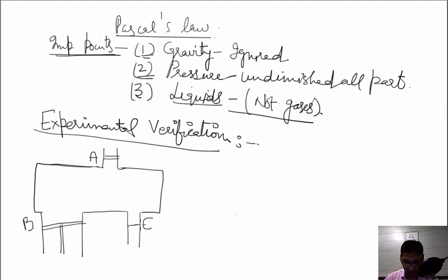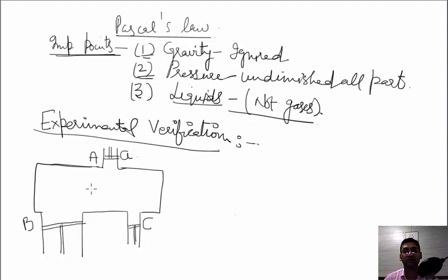We have massless and frictionless cylinders in two pistons. If we apply a pressure or force, we will check how much force is transmitted. Let capital A — the first opening — have area of cross-section small a. Capital B has area of cross-section 2A. The third opening C has area of cross-section A by 2.